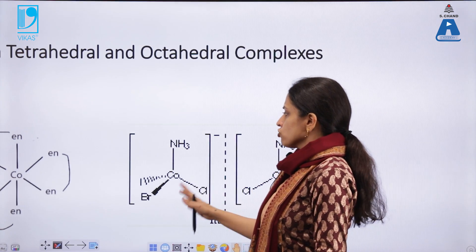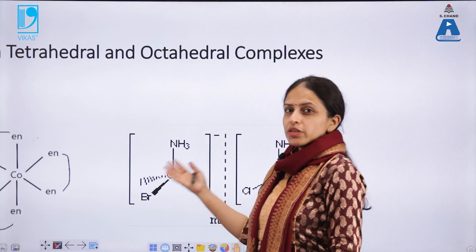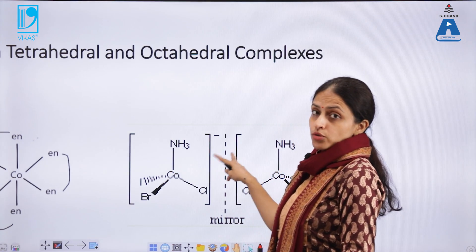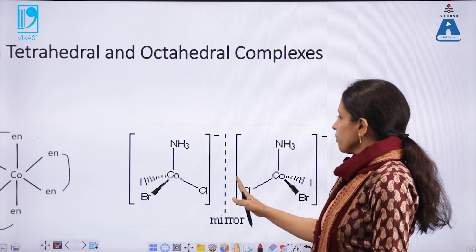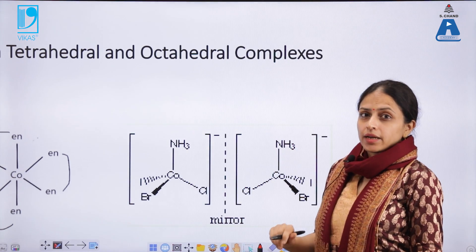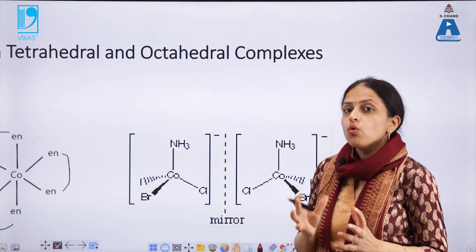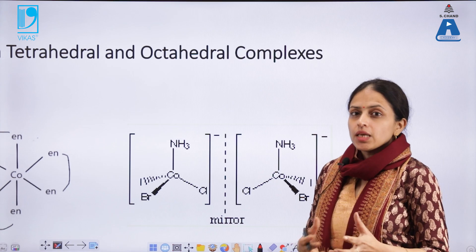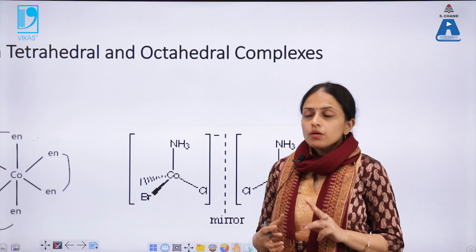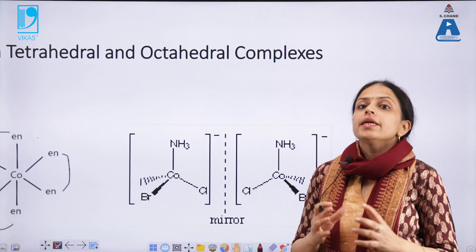One important point regarding optical isomers — as we also discussed in organic chemistry — is that if the two forms of optically active isomers are present in equal amounts, the mixture as a whole will be optically inactive. That is, if both the R and S forms are present in equal amounts, the mixture will be optically inactive. This is called a racemic mixture — a mixture of enantiomers present in equal amounts.